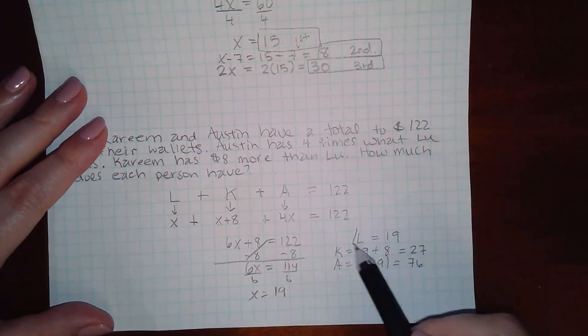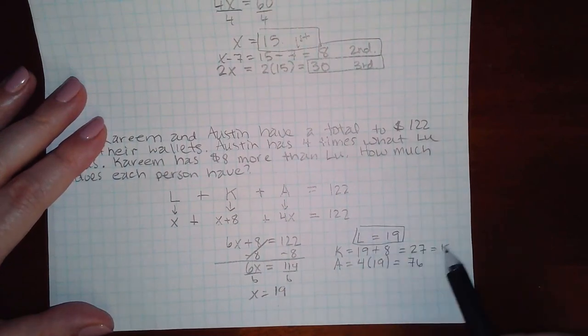So these are the numbers you're going to use for Lou, Kareem, and Austin.